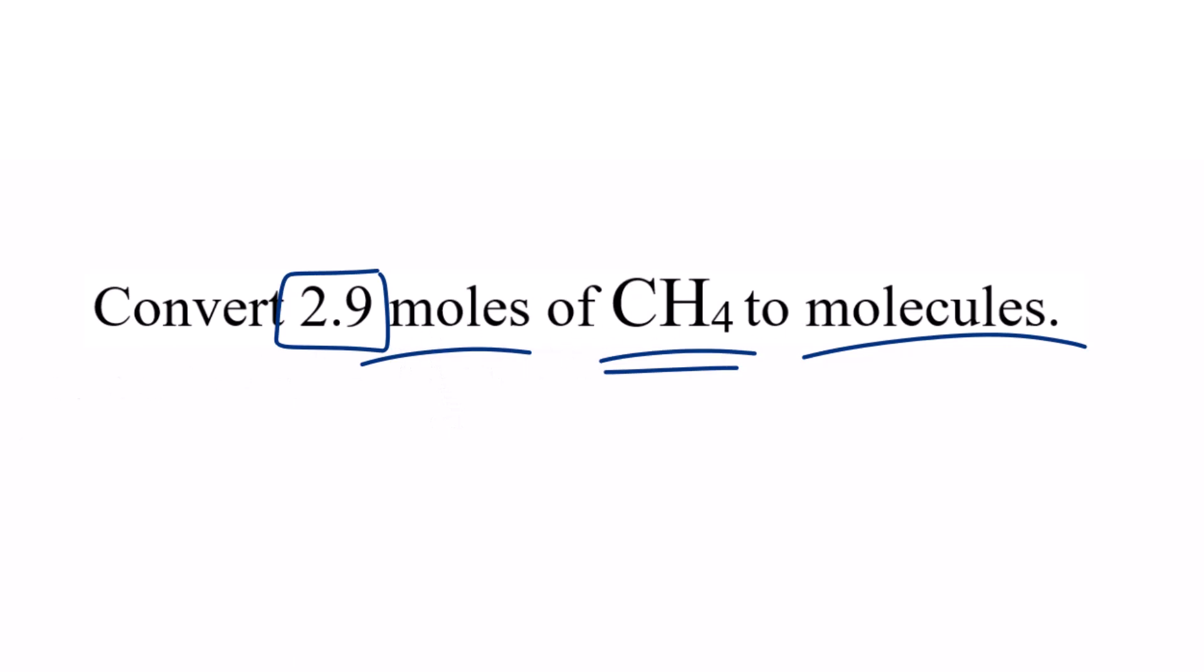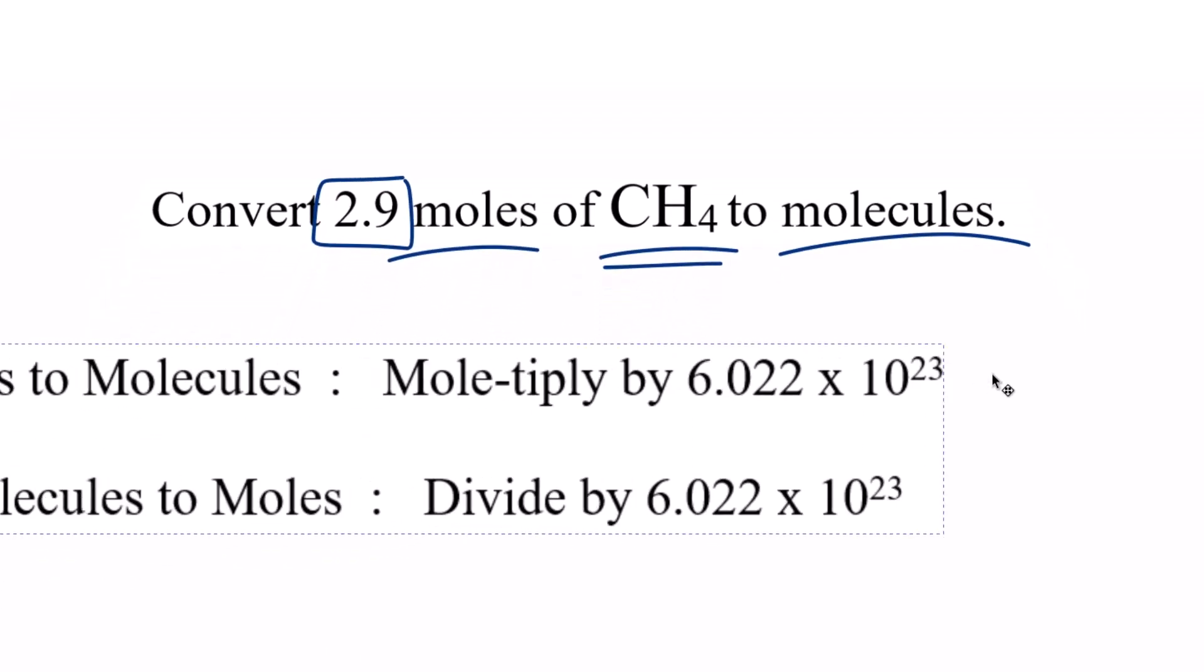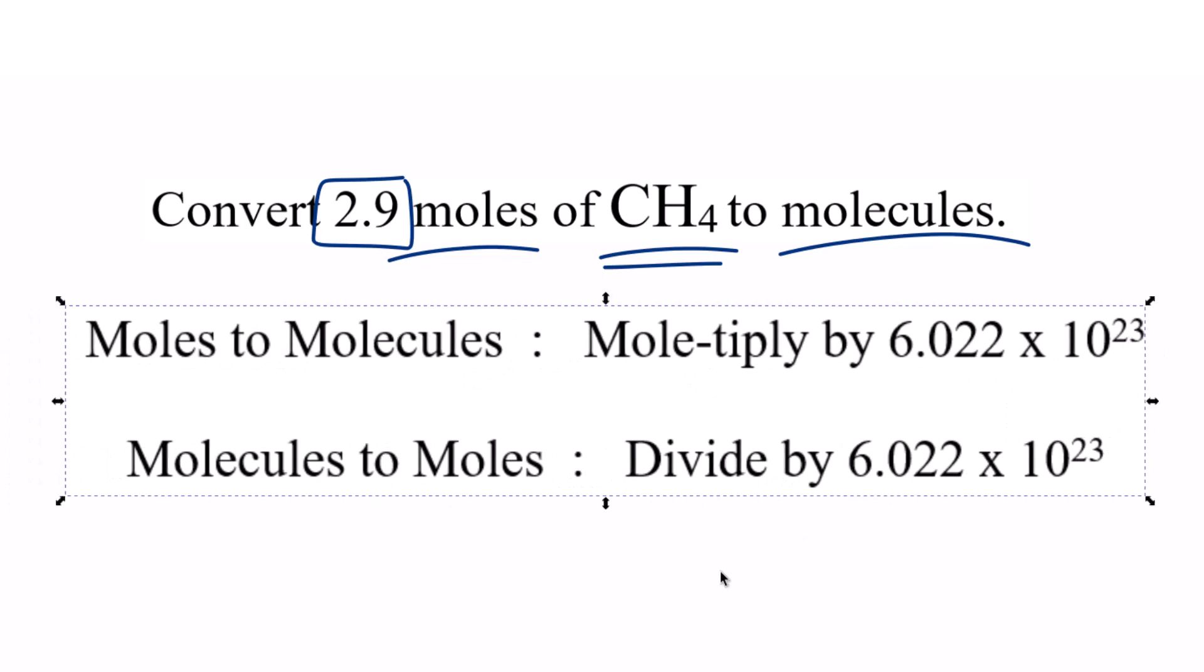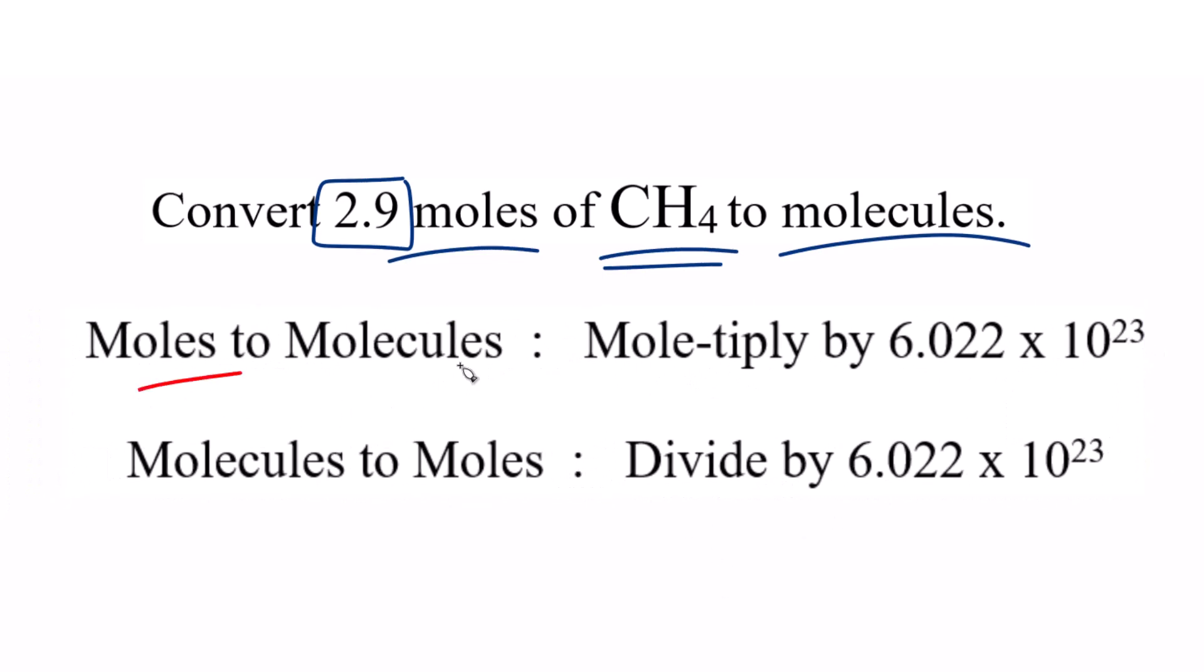When converting from moles to molecules, it's helpful to think of this mnemonic. We're going from moles to molecules, so we multiply by Avogadro's number. Whenever you're going from moles to another unit like liters or grams, you multiply. Here, because we're going from moles to molecules, it's Avogadro's number.